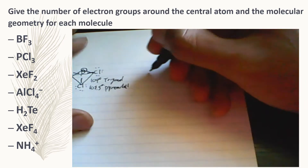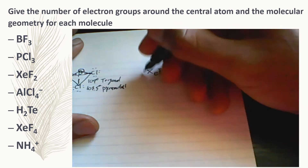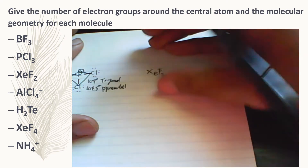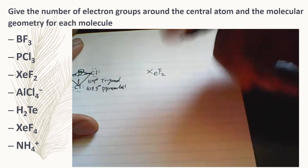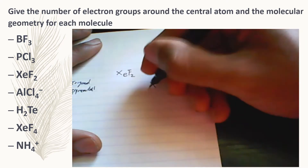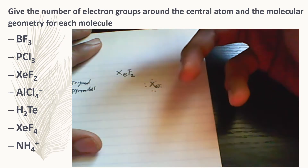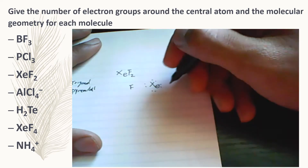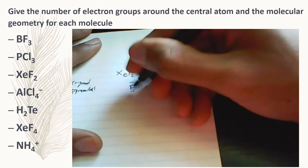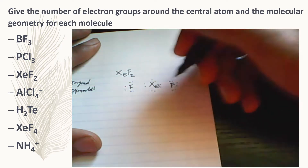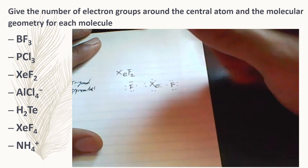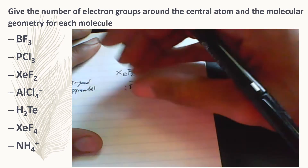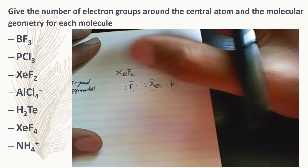The next one is xenon difluoride. Pro tip for the exam: I might give you the formula, or I might just give you the name of the compound, then you have to write the compound itself, then the Lewis dot structure. Xenon, being a noble gas, means it already has all of its electrons completed — it already has the octet. Fluorine is going to be around this molecule. Since xenon is past group three of the periodic table, it can actually use d orbitals.